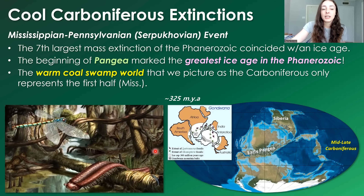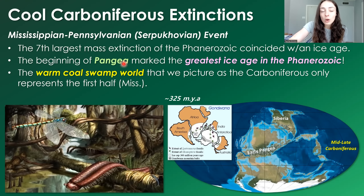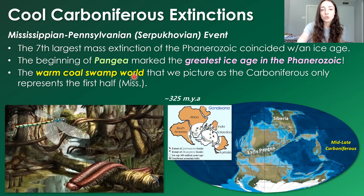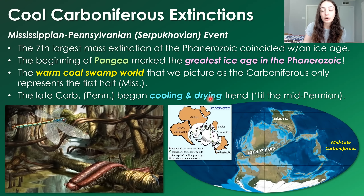You might remember the Carboniferous as a warm coal swamp world — that was the Mississippian sub-period. However, that coal swamp world led to abundant organic carbon burial, which decreases carbon dioxide and greenhouse gases, causing cooling. Because much of the land was covered in coal swamps, there was a drastic cooling event due to this drastic carbon burial, marking the beginning of the Pennsylvanian period with a cooling and drying trend that continued until the mid-Permian.